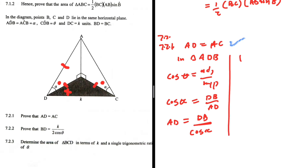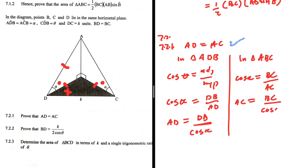In triangle ABC, using the same approach: cos(α) = BC/AC, so AC = BC/cos(α). Since we are told BD equals BC, it follows directly that AC equals AD, which is what we were required to prove.